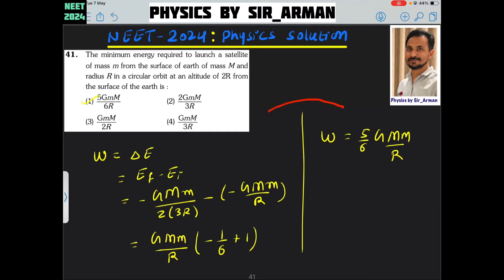Whenever altitude is given, it means the height is given from the surface of earth which is 2R, but from the center of the earth it becomes R plus 2R which is 3R. So we always consider small r as the distance from the center of the earth.